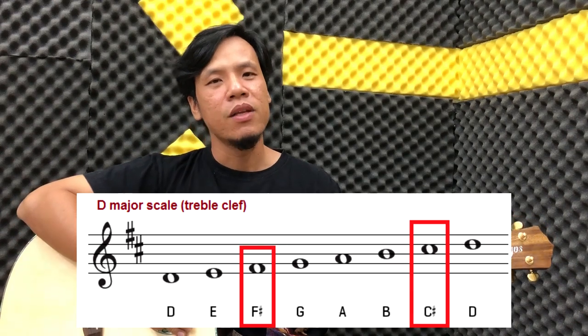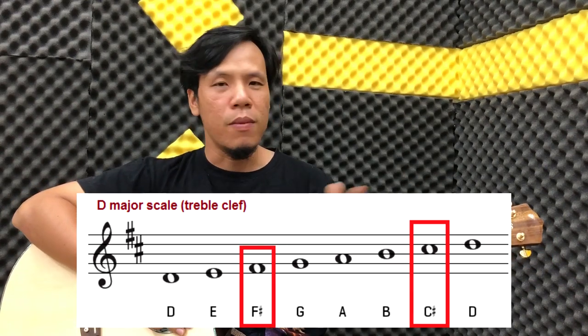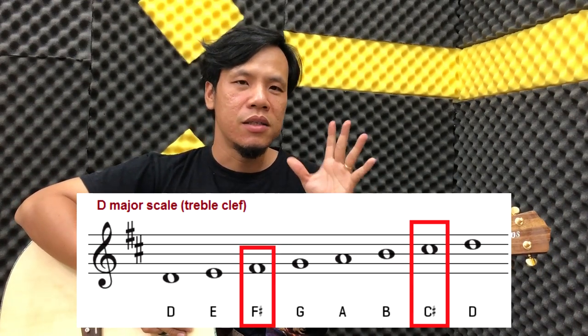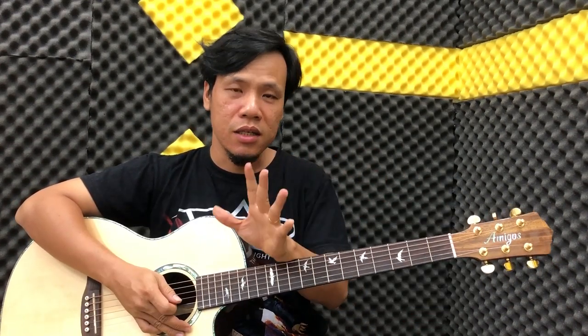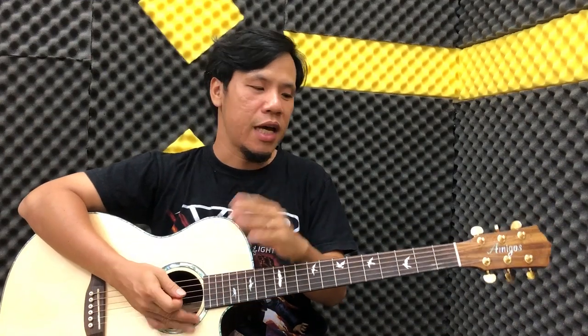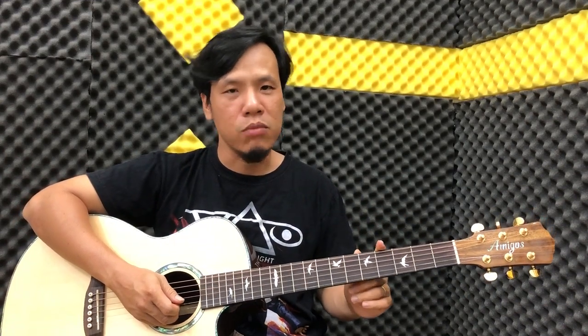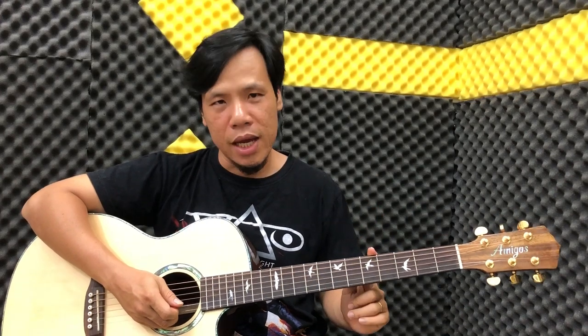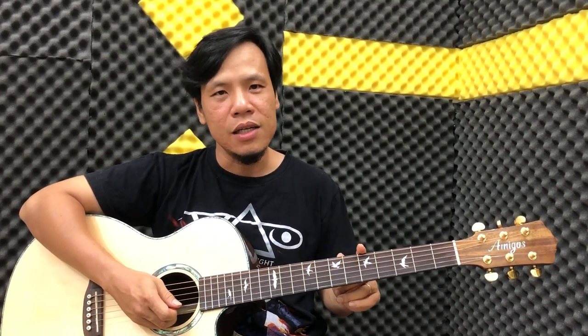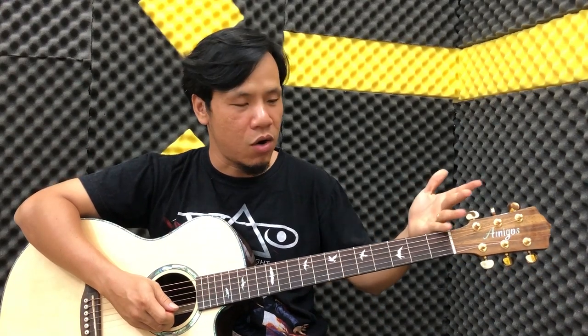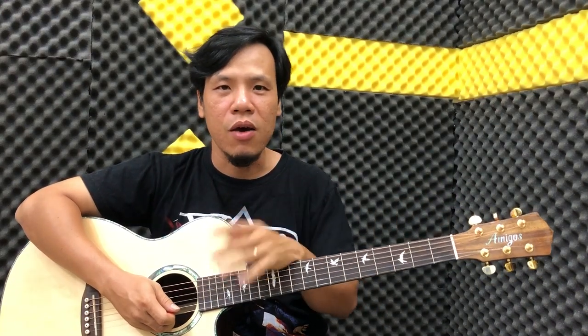Như vậy, trên cây đàn của các bạn, ở rê trưởng hoặc si thứ, chỗ nào nốt đô thì các bạn không đánh, các bạn thay nó bằng nốt đô thăng. Chỗ nào nốt pha, các bạn thay nó bằng nốt pha thăng. Và thế là chúng ta có toàn bộ scale của rê trưởng hoặc si thứ.